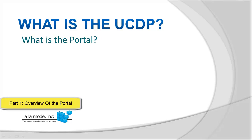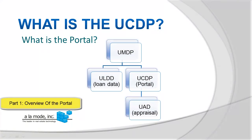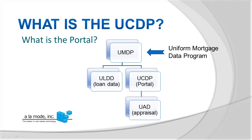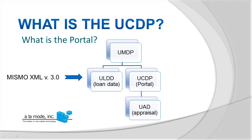First, let's put the portal in its place. The UMDP, or Uniform Mortgage Data Program, has a few moving pieces. The GSEs are moving to standardize not just the appraiser's data, but the entire loan package that your clients and lenders submit to them for purchase on the secondary market. The new standard is a version of MISMO XML. XML is very much like a spreadsheet, laid out in a very specific way, that allows the GSEs to run special metrics on the raw data for a mortgage loan, or set of loans, and decide if they're worth purchasing. The ULDD, which is the raw data for the loan itself, uses a version of MISMO XML, version 3.0.